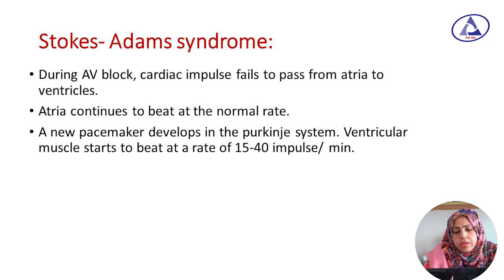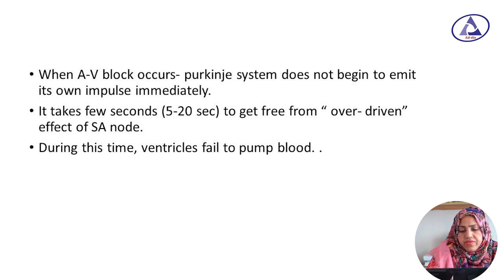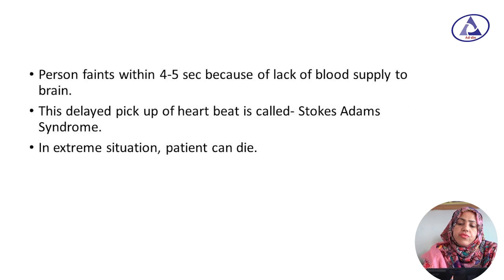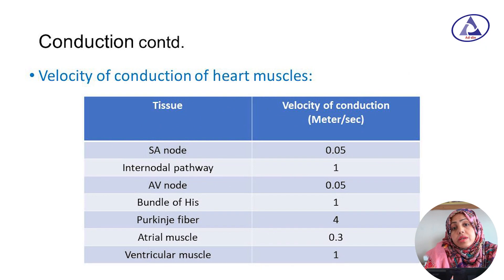Stokes-Adams syndrome: During AV block, the cardiac impulse fails to pass from the atria to the ventricle, but the atria continue to beat at their normal rate. A new pacemaker develops in the Purkinje system and the ventricle then starts to beat at a rate of 15 to 40 impulses per minute. However, the Purkinje system does not begin to emit its own impulse immediately — it takes 5 to 20 seconds to recover from the overdriven effect of the SA node. During this time, the ventricle fails to pump blood, and the person faints within 4 to 5 seconds due to lack of blood supply to the brain. This delayed pickup of the heartbeat is called Stokes-Adams syndrome, and in extreme situations the patient can die.